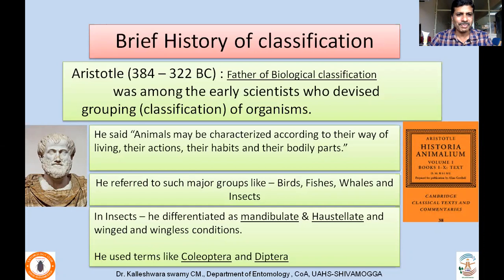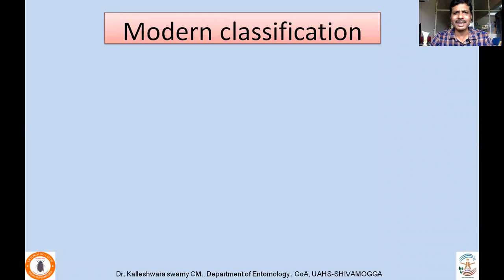In case of insects, Aristotle differentiated mandibulate and suctorate — biting and chewing type of mouthparts and piercing and sucking type of mouthparts — and also winged and wingless conditions. He gave due importance to characters when classifying. The terms such as Coleoptera and Diptera, the nomenclatures, are being used nowadays, having been given by Aristotle. After Aristotle, not a good contribution actually took place till very recently, up to almost the 16th century.